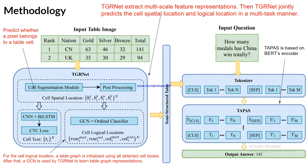TGR-Net jointly predicts the cell spatial location and cell logical location in a multitask manner. The model has a cell segmentation module that first segments the table into rows and columns as boxes. This module predicts whether a pixel belongs to a table cell or not — if it does, it processes it further; otherwise it is ignored.